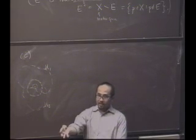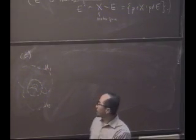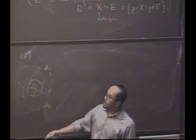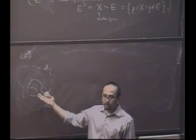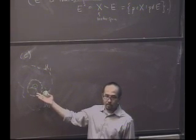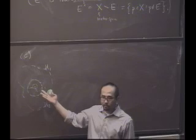Take the smaller one. Good. And if there were finitely many, you would do what? Take the minimum radius one. Right?